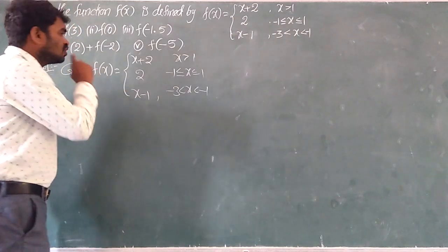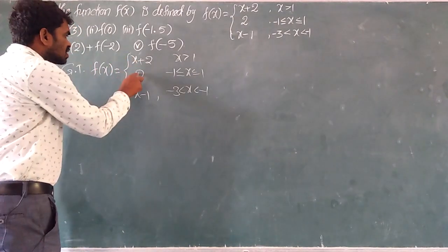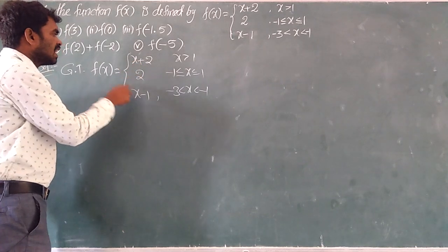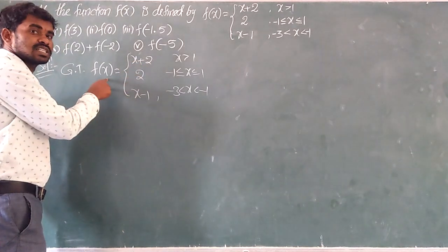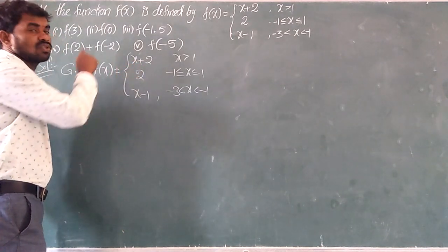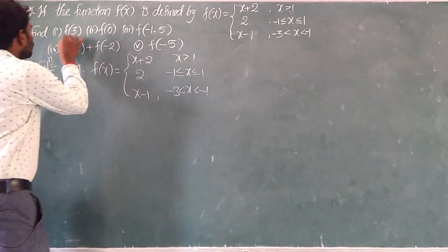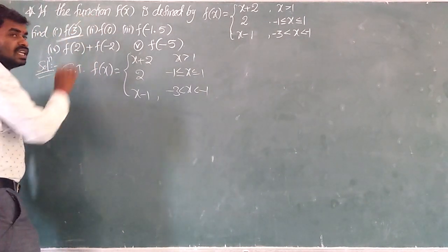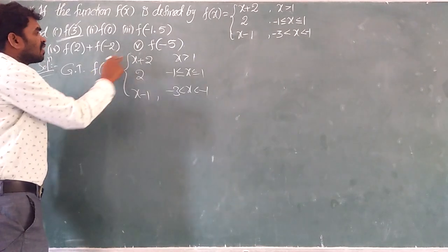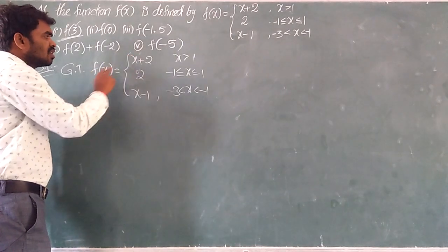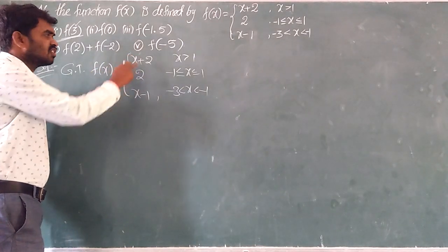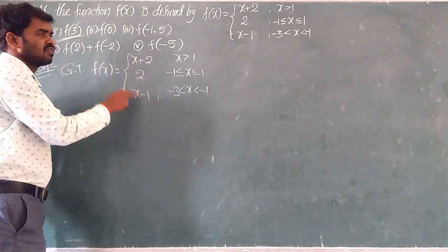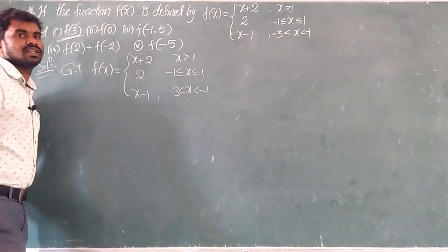Three functions are given. Which one can be taken as f of x? According to the given question, for example, first one is f of 3. So for 3, what is f of x — this one, or this one, or this one? Actually, three functions are given. So which one we should take for f of x for x equals 3?